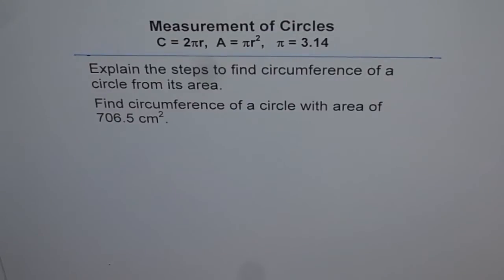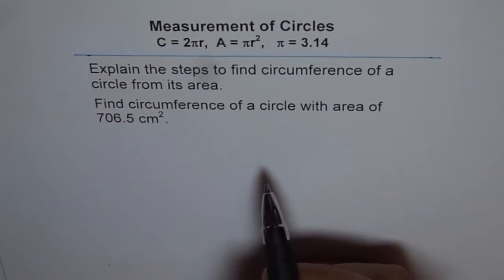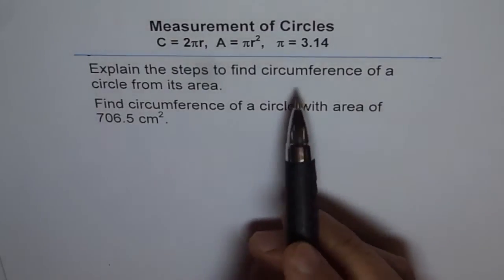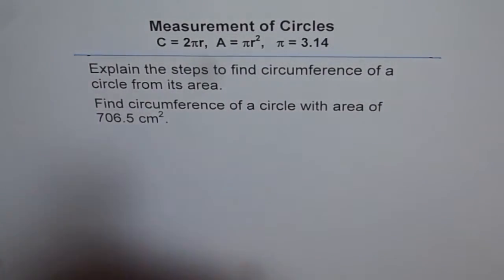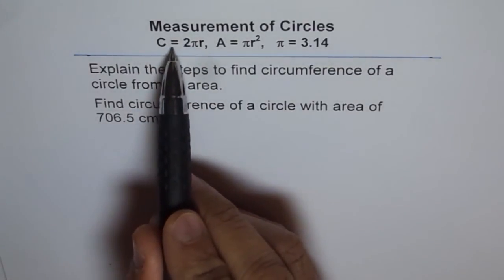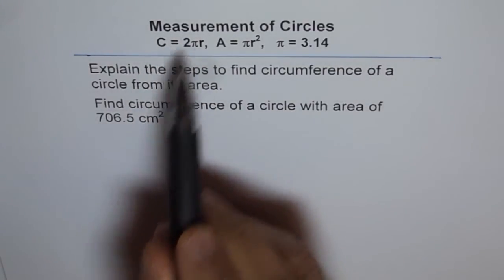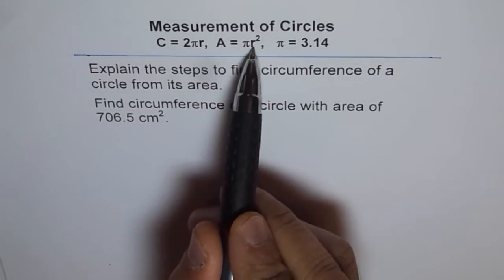I'd like your attention while solving this problem — it is kind of tricky. So first we will derive a formula to find circumference from a given area. As you can see from these formulas, circumference is equal to 2πr and area equals πr².